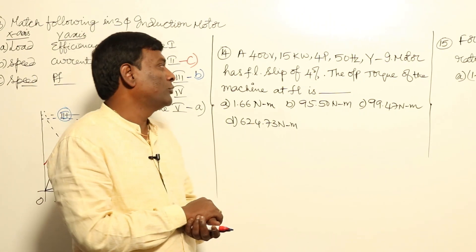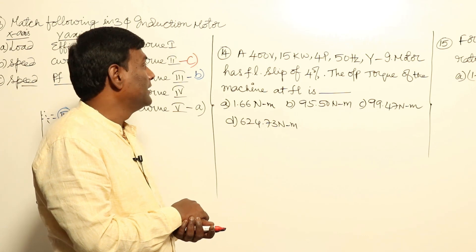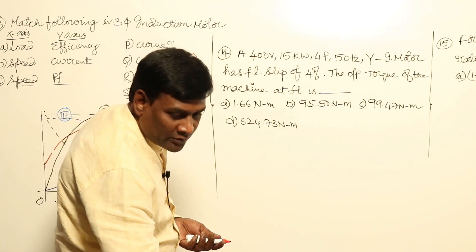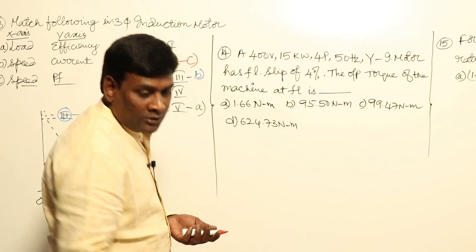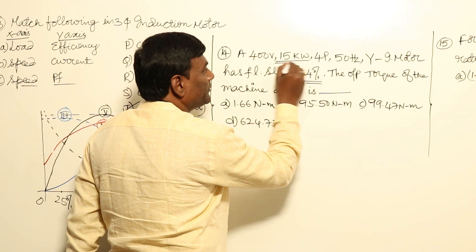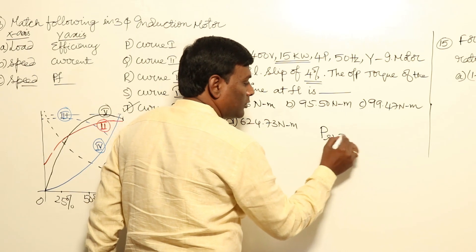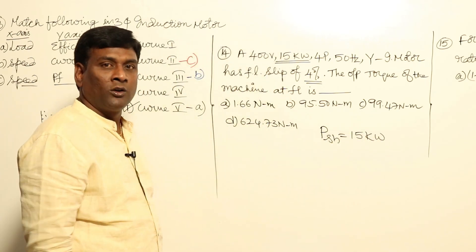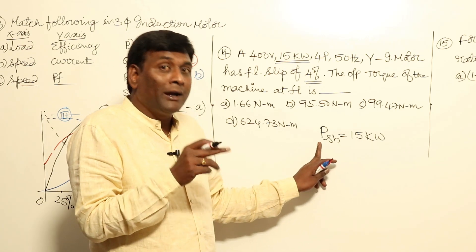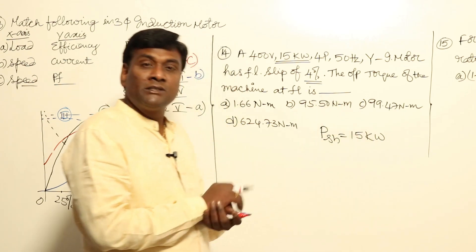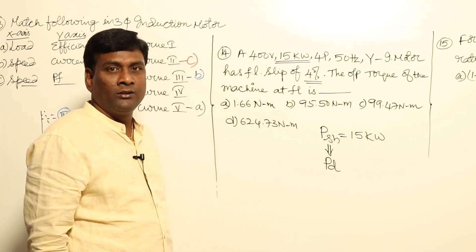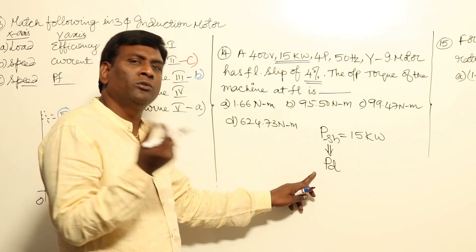Next question: a 400 V, 50 kW, four-pole, 50 Hz, star-connected induction motor has full-load slip of 4%. The output torque of the machine at full load is to be found. The output power (shaft power) is 15 kW. The developed mechanical power minus mechanical losses equals shaft power, but no information is given about mechanical losses, so we treat 15 kW as the developed power.